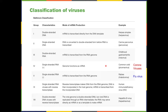Classification of viruses is based on the type of genome they have and how that genome is processed inside the cell. This is called the Baltimore classification — the most modern system — and divides viruses into seven groups: double-stranded DNA, single-stranded DNA, double-stranded RNA, positive-sense single-stranded RNA, and others. The COVID-19 virus is a positive-sense single-stranded RNA virus, meaning its RNA can directly be used to make protein.